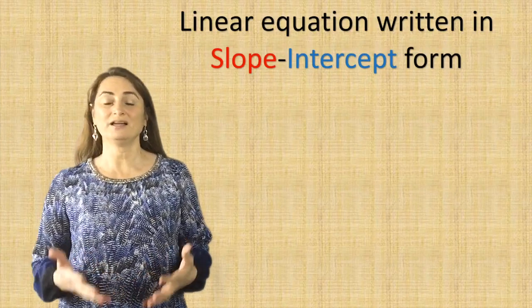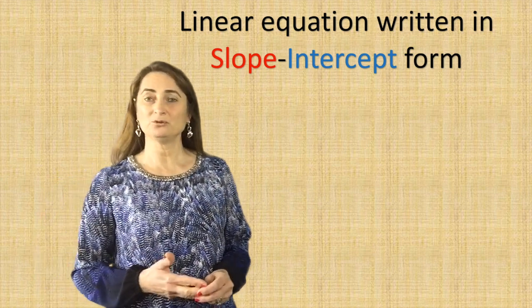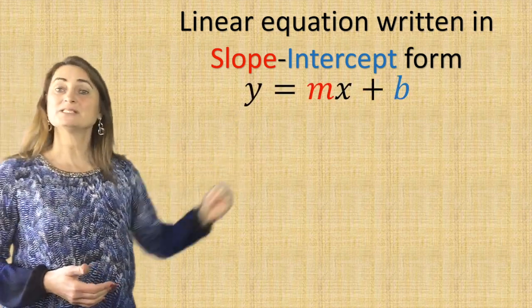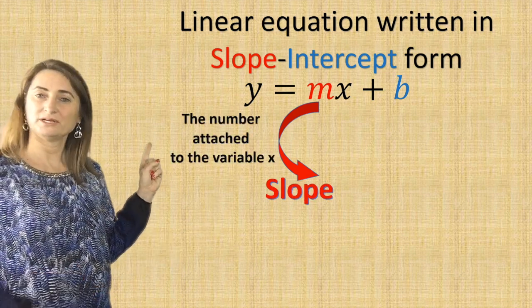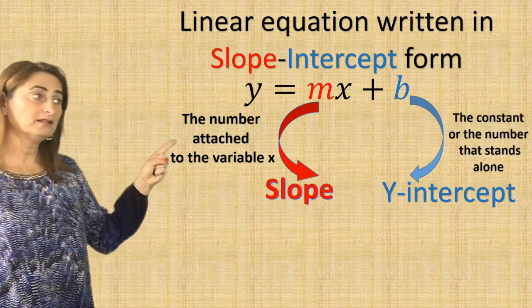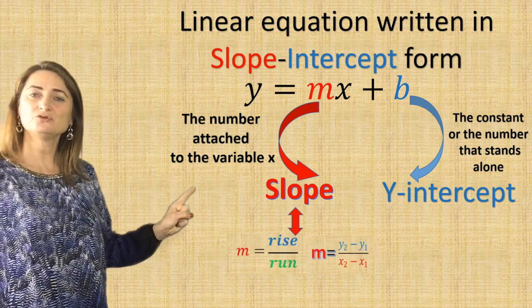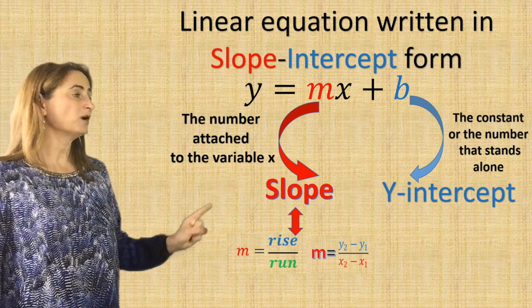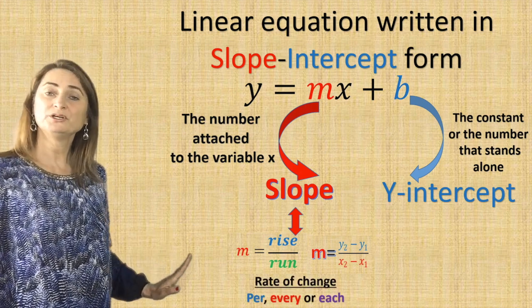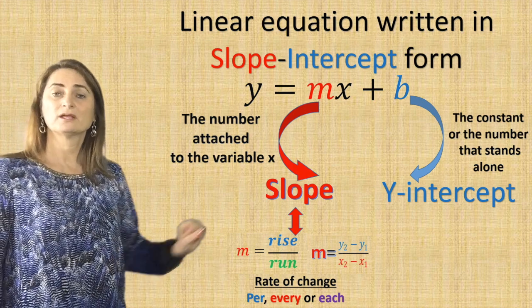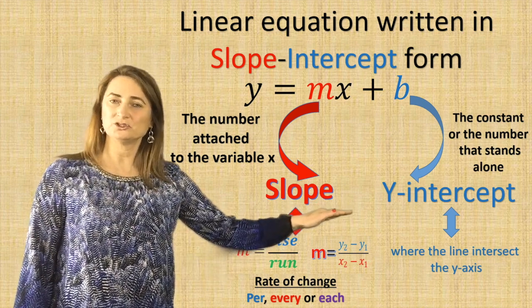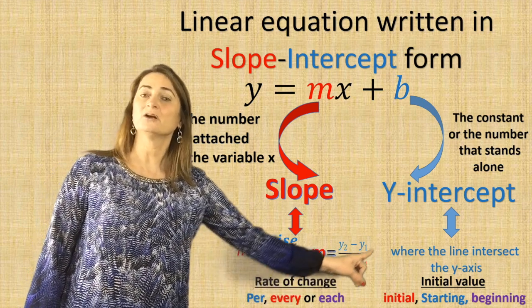We can write an equation for that line of best fit. I'll review how to write the equation in slope-intercept form. Linear equations written in slope-intercept form are y equals mx plus b, where m is the slope — the number attached to the variable x — and b is the y-intercept, the number that stands alone. To find slope from a graph, you use rise over run, or the change in y divided by the change in x: (y2 minus y1) over (x2 minus x1). To interpret the slope in words, use the words per, every, or each, because it represents a rate of change. The y-intercept is where the line crosses the y-axis and is always the initial value — use the words initial, starting, or beginning.